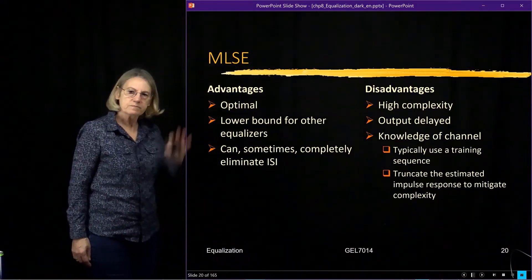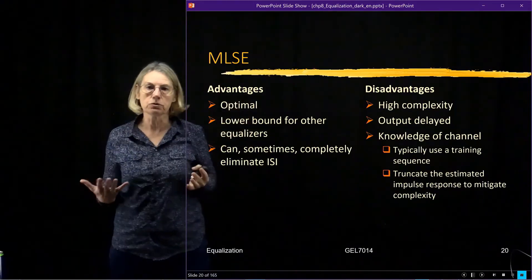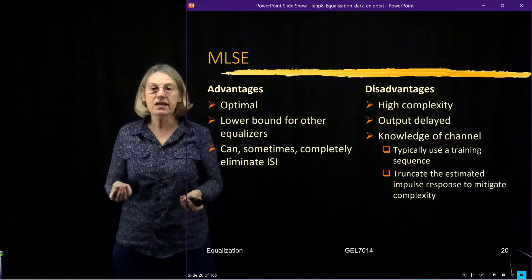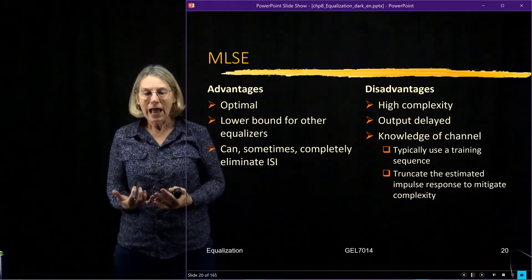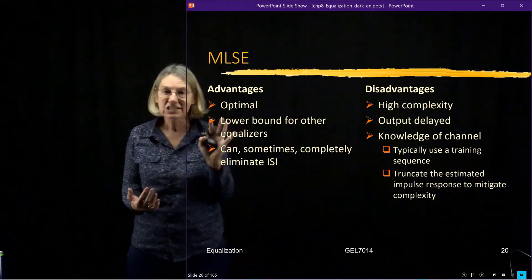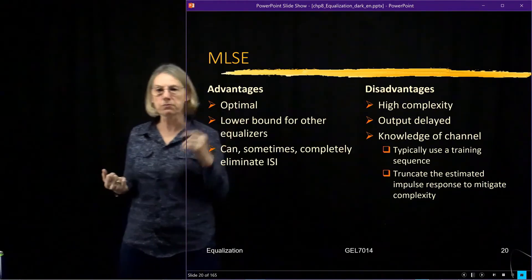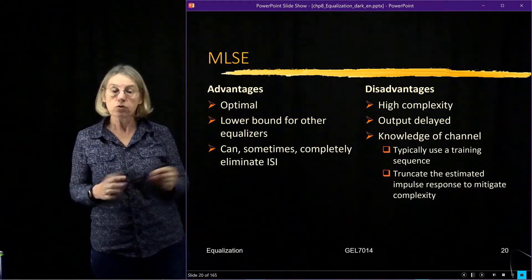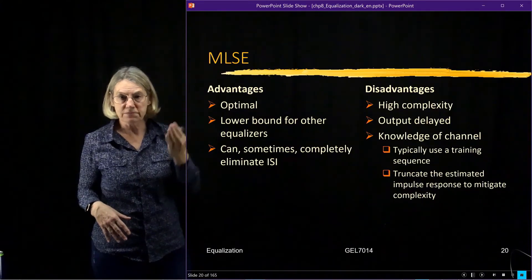So in summary, for the maximum likelihood sequence estimator, what are the advantages? Well, it's optimal. It's the best you can do. It's great to know the optimal. It's usually very useful information because if I'm going to look at something that's suboptimal, I would like to know how suboptimal it is. So I can compare the performance I get from an easier equalizer and say, well, if it's pretty close, then why would I go to the work to do the optimal one if the suboptimal one is close? So it's great to have a lower bound for other equalizers. And of course, I mentioned there are some where I can completely eliminate the ISI. So not only is it optimal, sometimes it's like perfect.